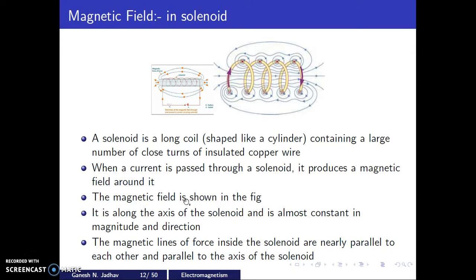Using the right-hand thumb rule for a solenoid: the thumb indicates the direction of current in the straight wire case, and the curled fingers indicate the direction of the magnetic field. In the case of the solenoid, the curled fingers indicate the direction of current flowing through it, and the thumb indicates the direction of the magnetic field — the north pole. The magnetic lines of force inside the solenoid are nearly parallel to the axis of the solenoid.